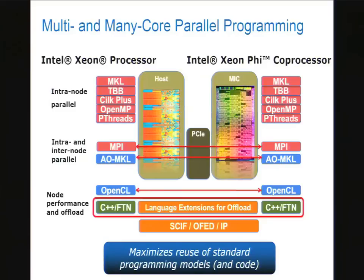Porting to an Intel Xeon Phi is extremely quick. You have to have highly parallel code and a lot of vector content if you want performance, but at least you can port and get the thing working quickly and then use standard techniques to inform your next step.